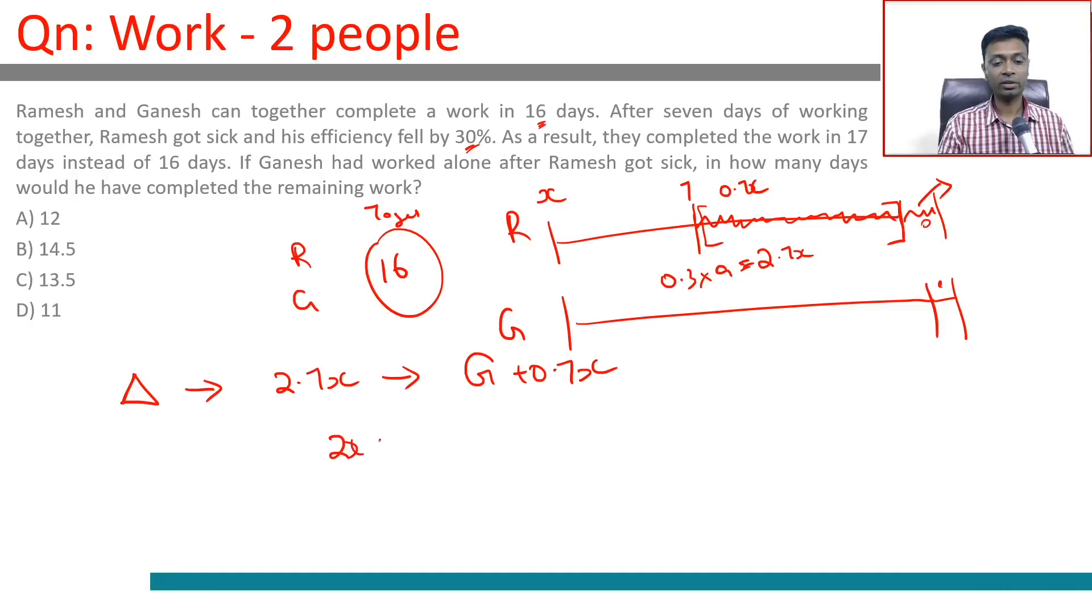Now we know if R can finish it in R days, G can finish it in half the time. We can come back to this equation and finish it off, very simple. We know that Ganesh is twice as efficient as Ramesh.